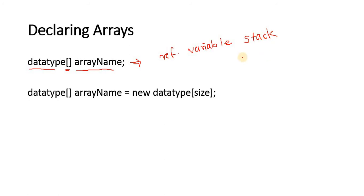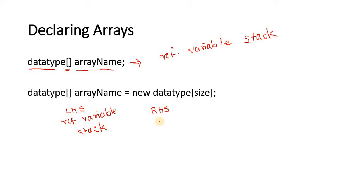Alternatively, you can have the array declaration with both sides of an equation. The left-hand side is the actual reference variable stored on the stack, while the right-hand side is the actual array for which memory will be allocated on the heap. Since we are using the keyword new, we say the array is a dynamic element.